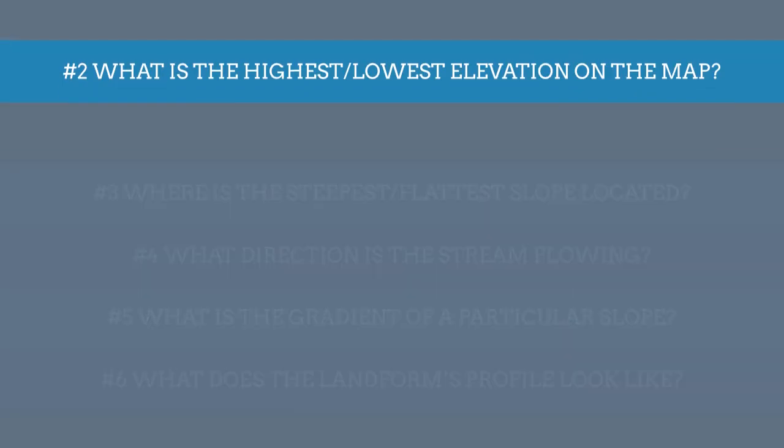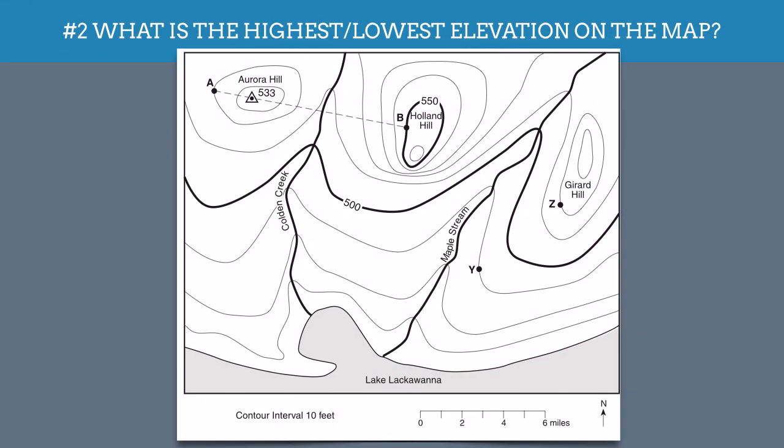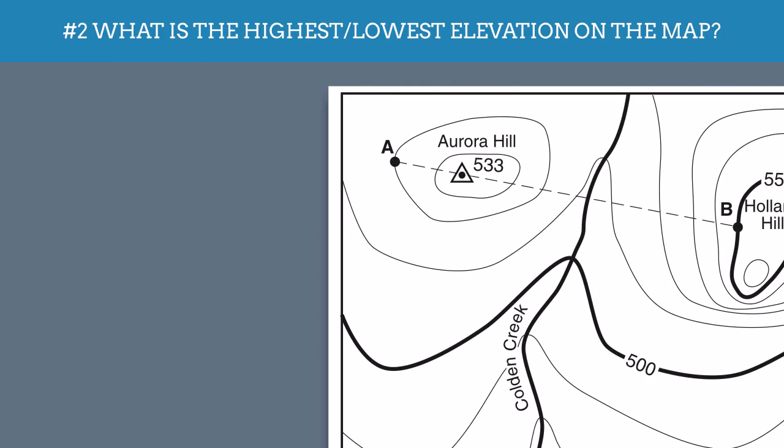Next, how do we find the highest and lowest elevation on a map? Well, again, let's go back to that map we saw before. Now, this map is helpful because it actually has a symbol, shown here with a triangle and a dot, that shows you the actual highest elevation, in this case 533 feet.